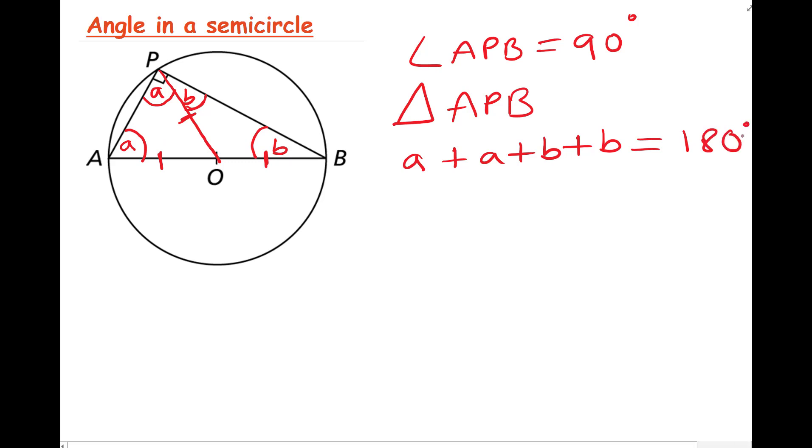Now we have ourselves an equation. Let's solve the equation. So we have A and A, which is 2A, and B and B, which is plus 2B, and they're both equal to 180 degrees.